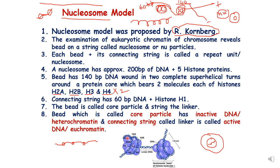In the picture you can see the bead and the connecting string called linker DNA. The bead has 140 base pairs of DNA wound around the octamer of histone proteins, and the linker DNA has histone H1 protein with 60 base pairs. So 140 plus 60 equals 200 base pairs of DNA total. The histone proteins are of 5 kinds: H2A, H2B, H3, H4, and H1. This represents the first level of packaging, proposed by Roger Ornberg.